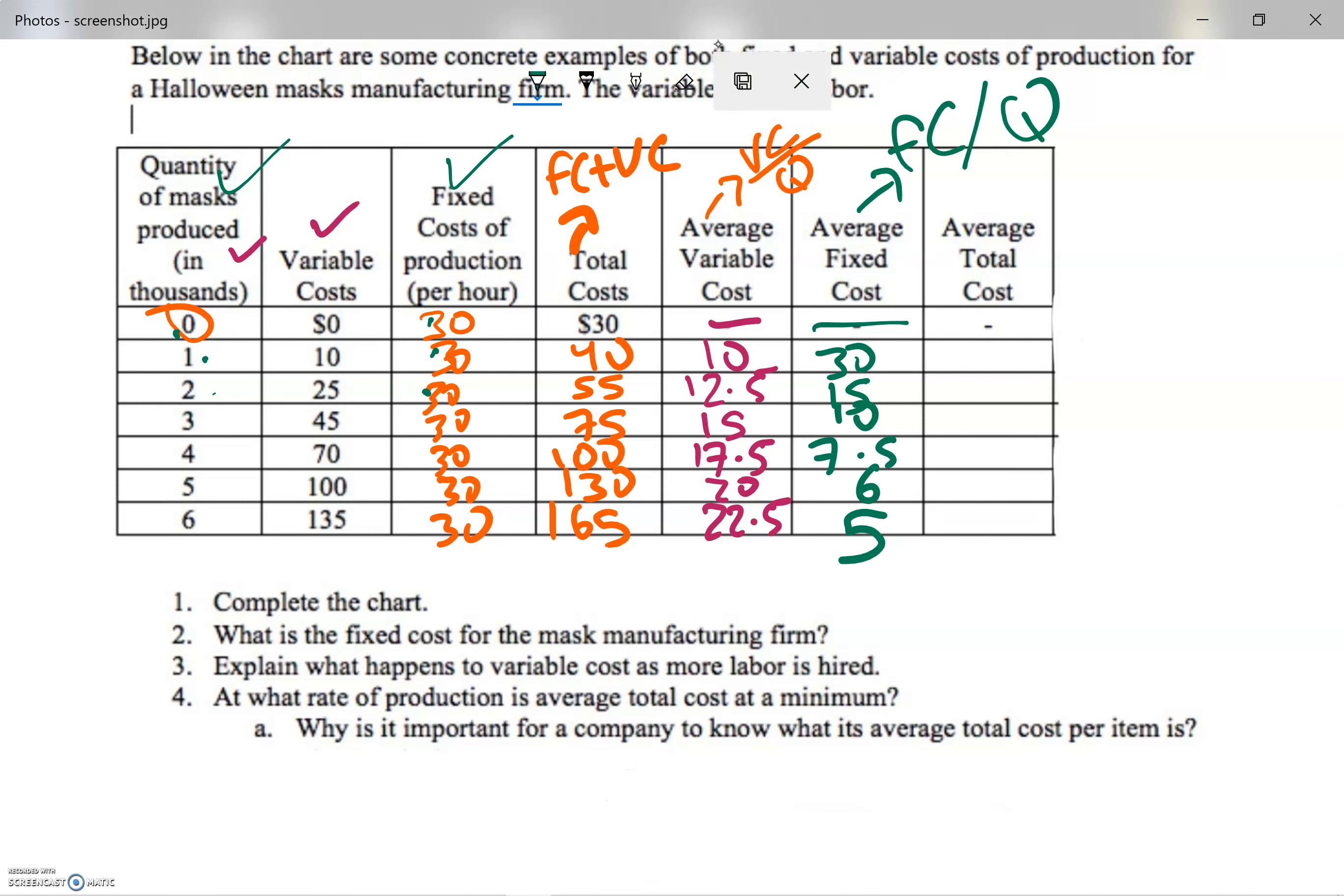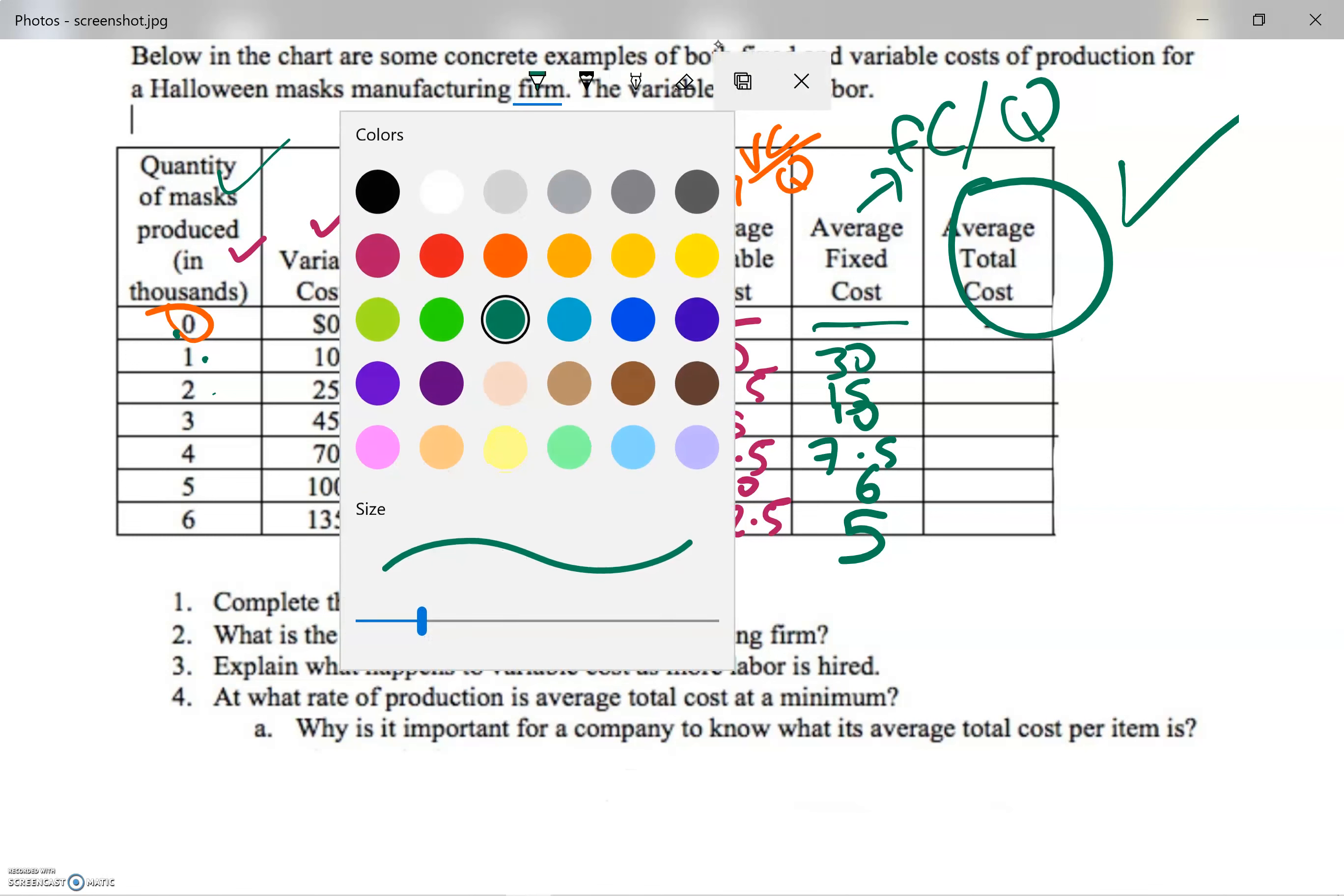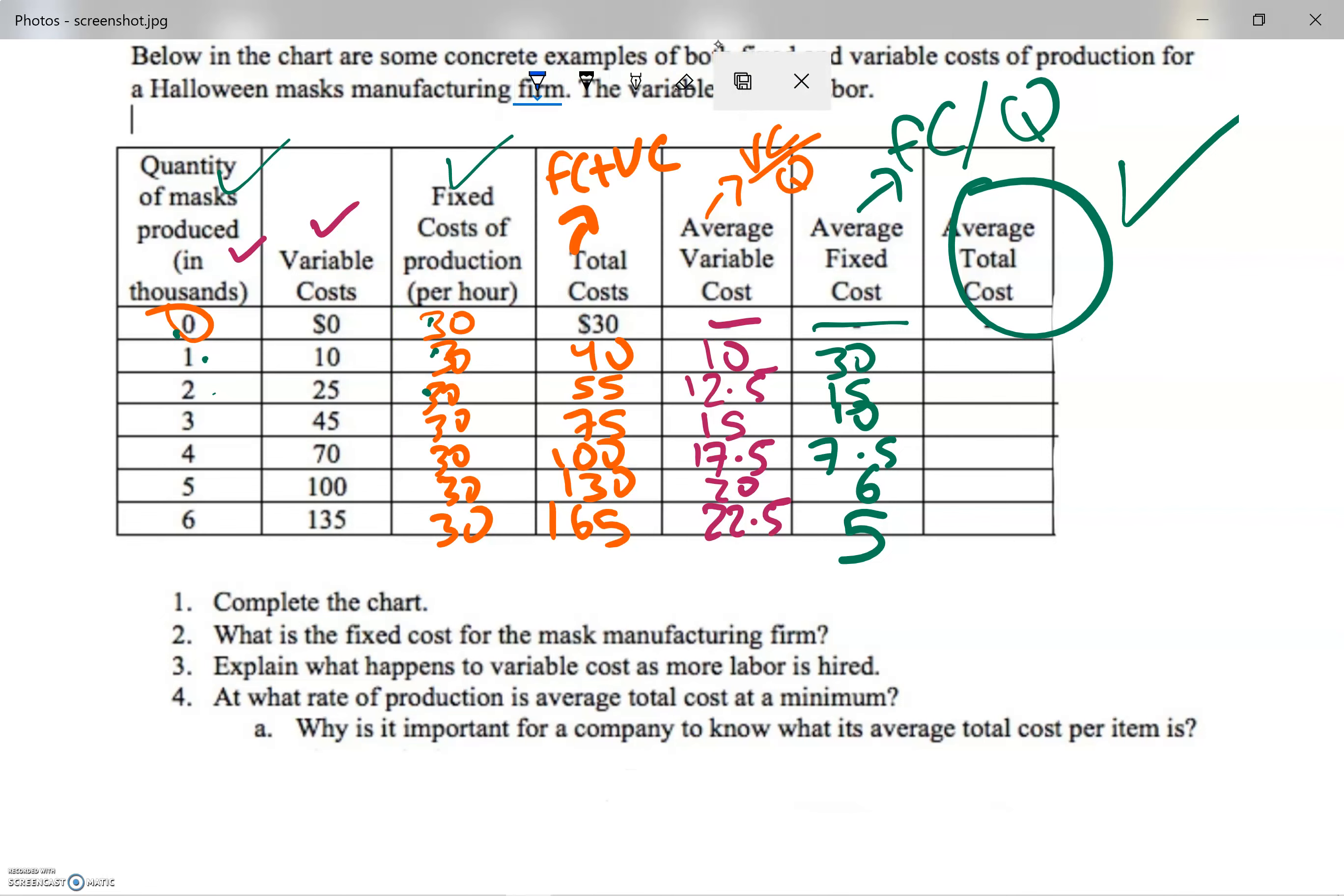Now I need to find the average total cost, and this is what I care about as an owner or an entrepreneur of a company. So I need to do total cost divided by quantity. As you can see, it's decreasing, reached the minimum, and then it started increasing again.